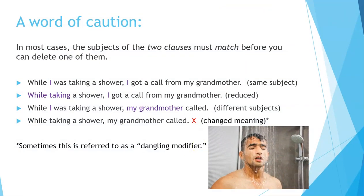A word of caution: in most cases, the subjects of the two clauses must match before you can delete one of them. For example, 'while I was taking a shower, I got a call from my grandmother' — same subject — can be reduced to 'while taking a shower, I got a call from my grandmother.' But 'while I was taking a shower, my grandmother called' has two different subjects: I and my grandmother. Changing it to 'while taking a shower, my grandmother called' is incorrect — it changes the meaning to suggest my grandmother was taking a shower. This is called a dangling modifier. Try to avoid that when reducing adverbial clauses.